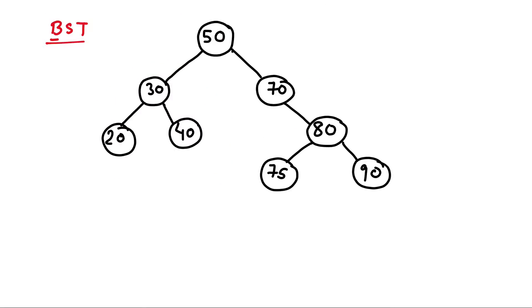Now we have to find the second largest element. Here we see that 90 is the largest. We know that if we do an in-order traversal of a binary search tree, the elements are printed in sorted order. So if we do in-order traversal, it means first print all elements of the left subtree, then the current element, then all elements of the right subtree.